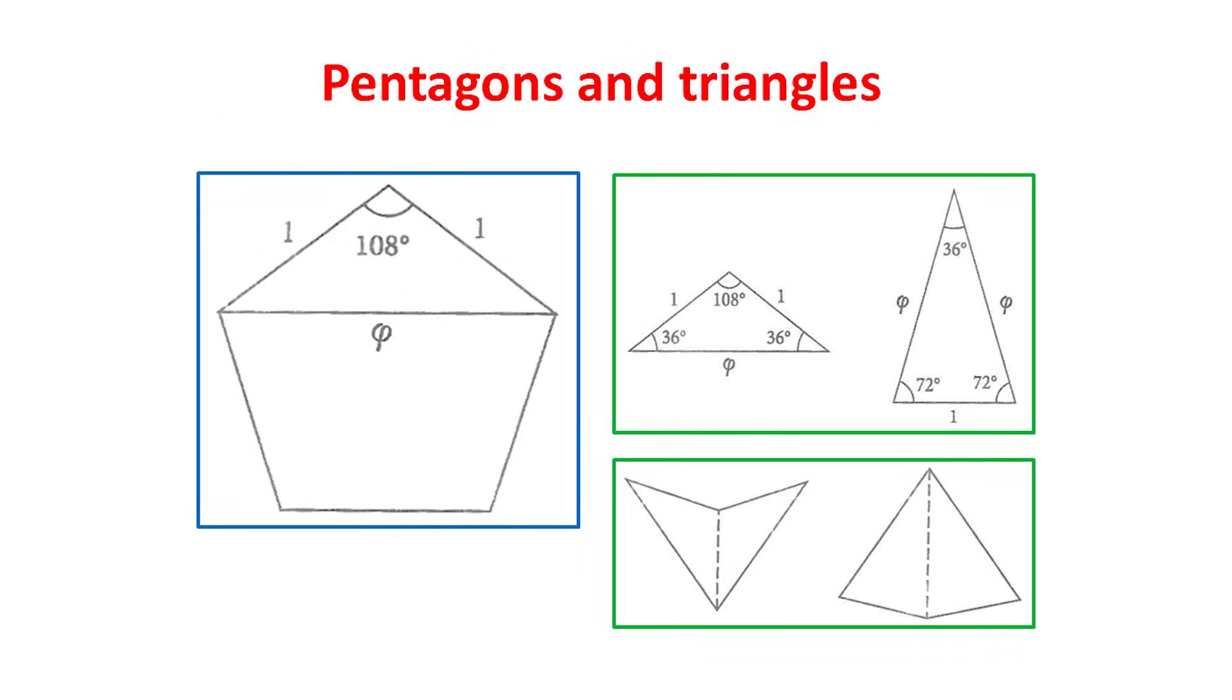Indeed, the golden ratio arises throughout geometry. For example, in a regular pentagon, the length of any of its diagonals is phi times the length of any of its five sides. Then, as shown on the right, an isosceles triangle, formed from two sides of the pentagon and one diagonal, has an angle of 108 degrees and two angles of 36 degrees. While a triangle formed from one side of the pentagon and two diagonals has one angle of 36 degrees and two angles of 72 degrees. Moreover, the number phi turns out to be twice the cosine of 36 degrees.